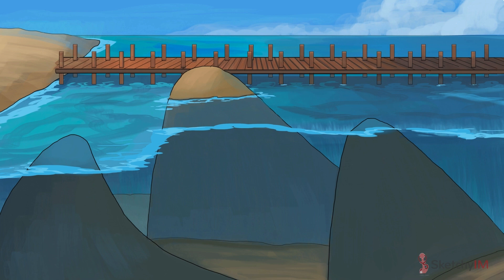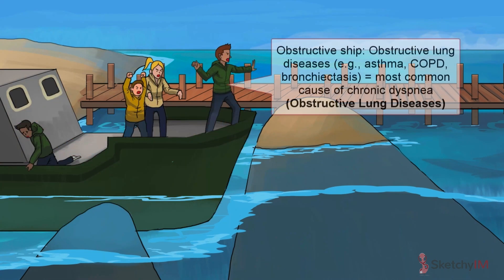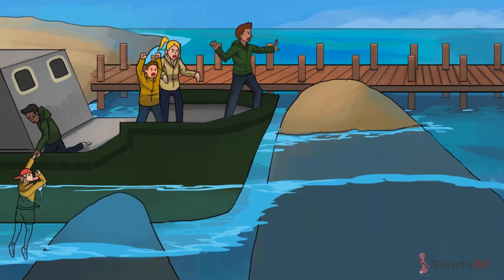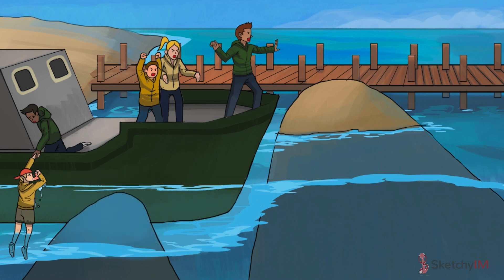We'll start with the obstructive lung diseases. This broad category encompasses processes that obstruct the movement of air out of the lungs. Whenever we say obstructive, just think about this boat of protesters intent on obstructing the illegal fishing activity here at Blue Bloater Bay. One of the protesters has fallen overboard — he's our recurring Sketchy symbol for asthma, embodying airway inflammation and hyper-responsiveness that results in reversible airflow obstruction, hence the reversed pink hat he's wearing.